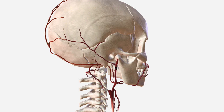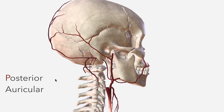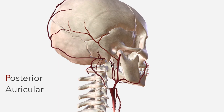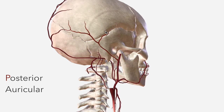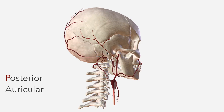We then have the posterior auricular artery, which passes lateral to the styloid process of the temporal bone to supply the auricle and the scalp in a distribution more anterior than that of the occipital.